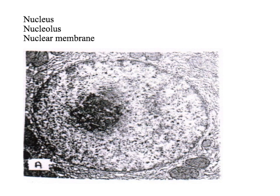Here we can see a nucleus. Some people might confuse it with a cell, but it's actually a nucleus. You can tell because you've got a dark patch, which is the nucleolus in the middle. The nucleolus is where ribosomal RNA is made, and ribosomes are made. The nuclear membrane has pores in it which are too small to allow DNA through, but they allow mRNA to pass through, which can carry the code to make proteins that will then travel to the ribosomes. The nucleus itself contains DNA, and that's the main function.